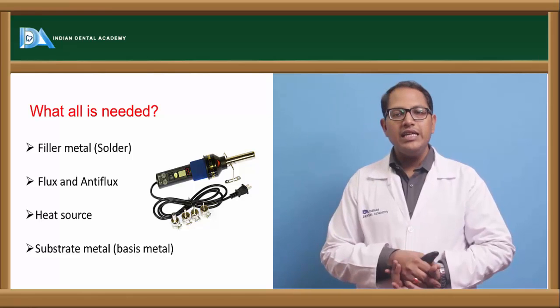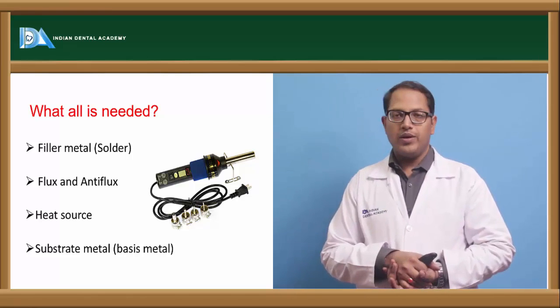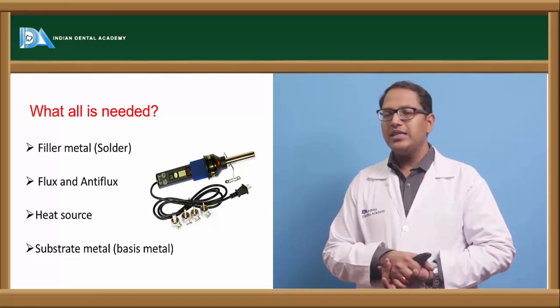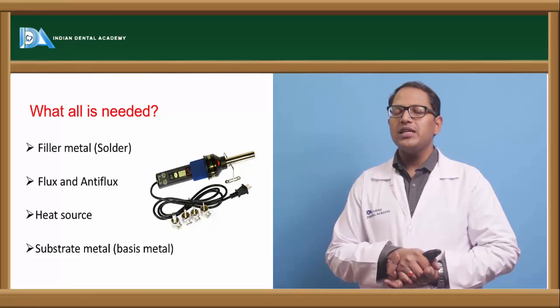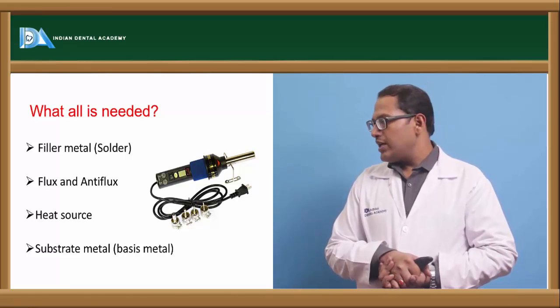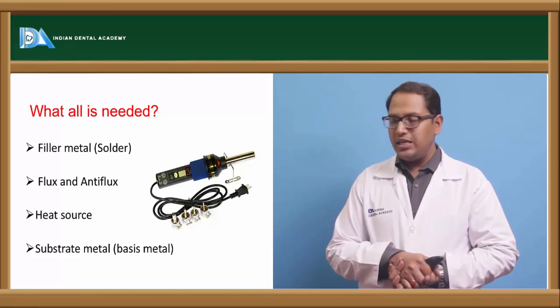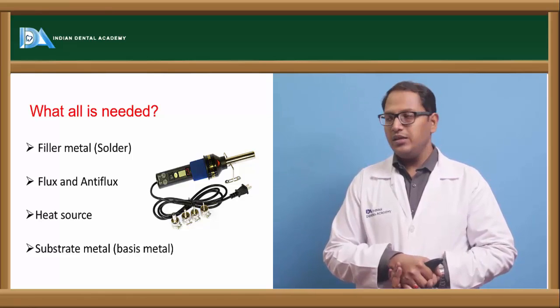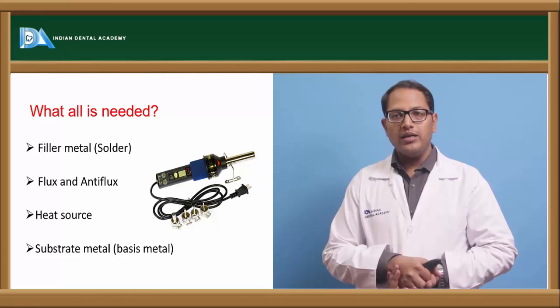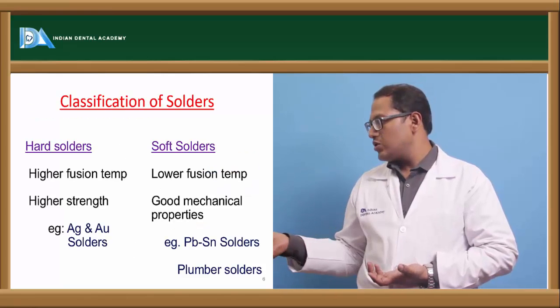What all is needed to do a soldering? So we need a filler metal that is solder, we need a flux and an antiflux. Flux in Latin means flow. Then heat sources, we need a heat source, we need a substrate metal or a base metal. So these are all what we require for a soldering purpose.